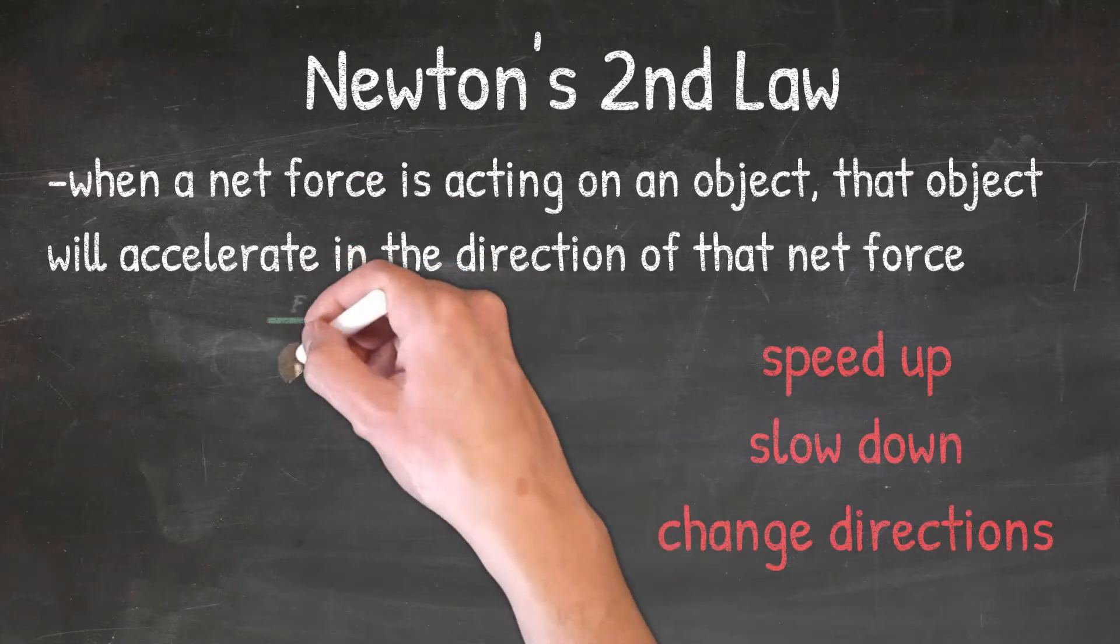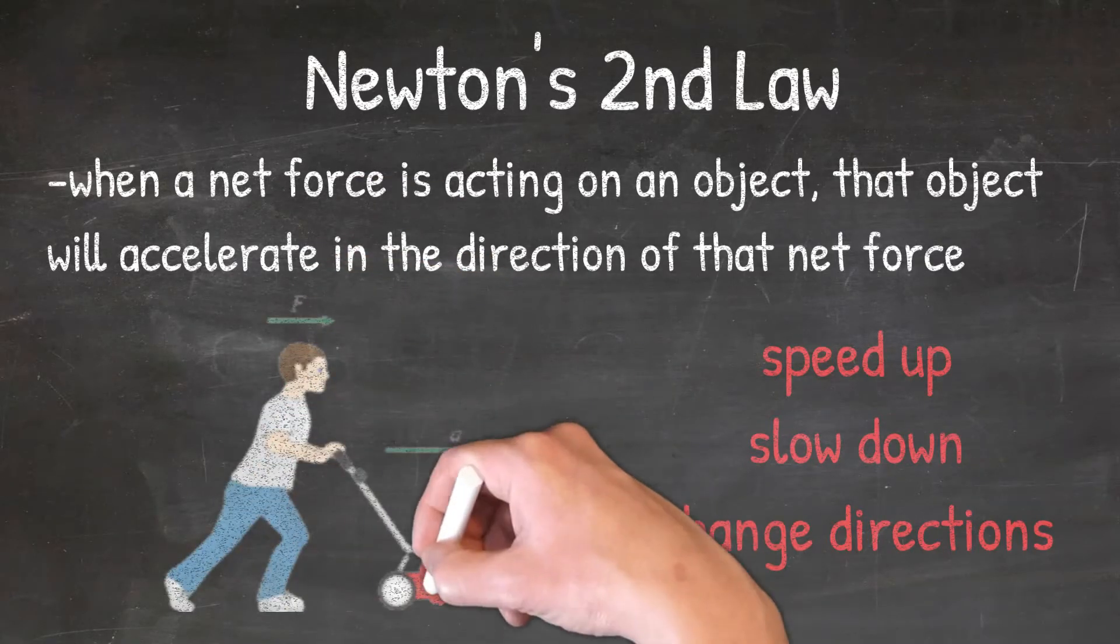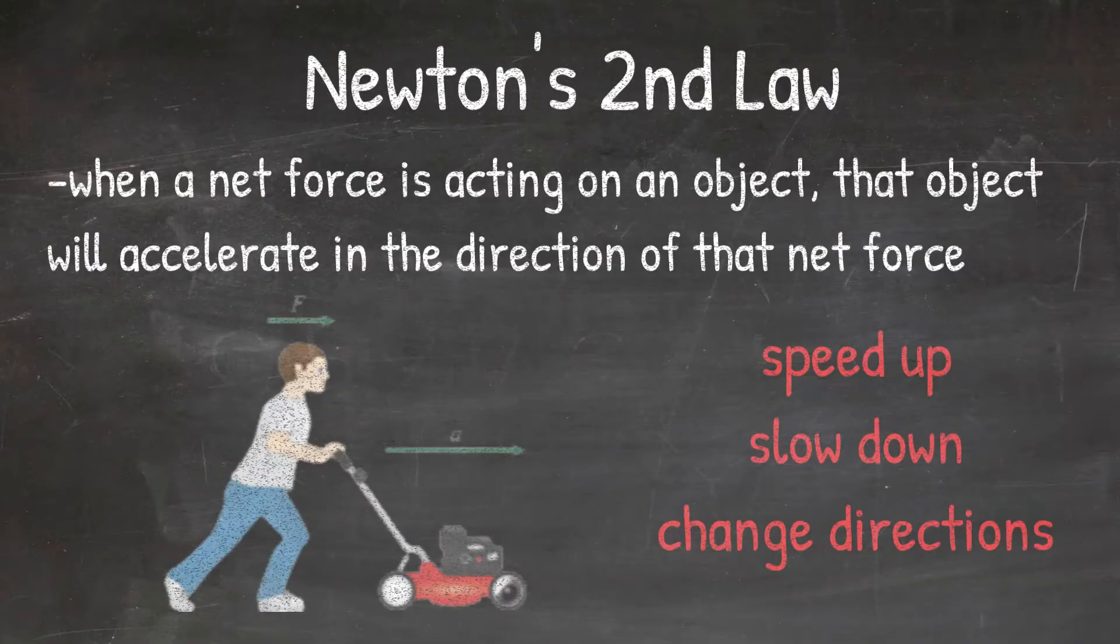In our example here, a man is pushing a lawnmower. He is applying a force in the forward direction or to the right. According to Newton's second law, the lawnmower would then accelerate or start moving to the right, because that is the direction the force is being applied.